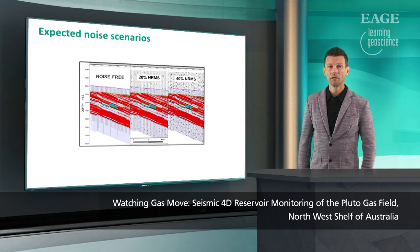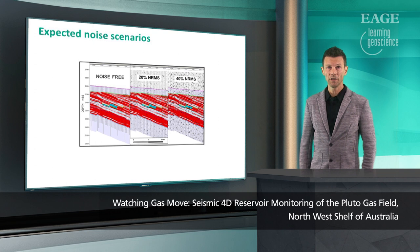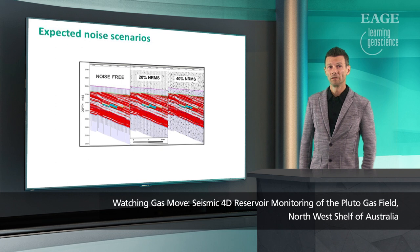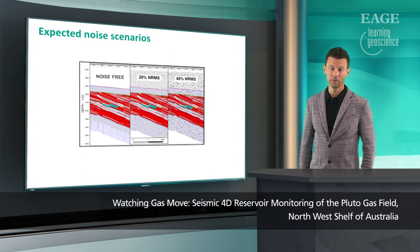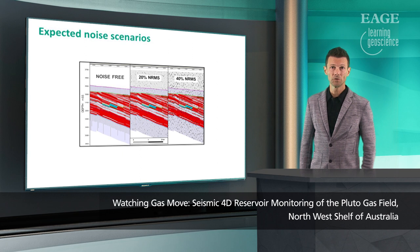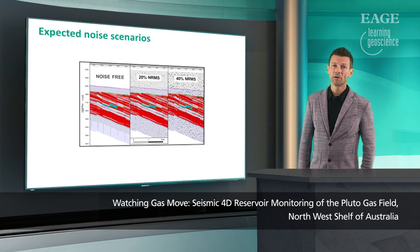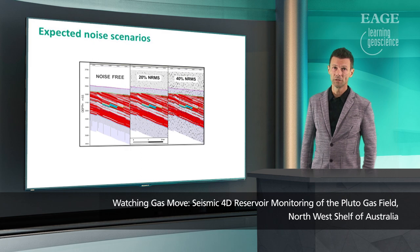Here you can see how these different noise levels affect the response from the reservoir model itself. On the left, you have the noise-free response computed using the petroelastic model from the reservoir model, and then you have overlain 20 and 40 percent RMS levels onto the same model. The blue colors represent a change in saturation, and the amplitude then is affected by this noise overlying. You can see that at 40 percent RMS, most of the traces are not visible, and it would be difficult to interpret the anomaly itself.